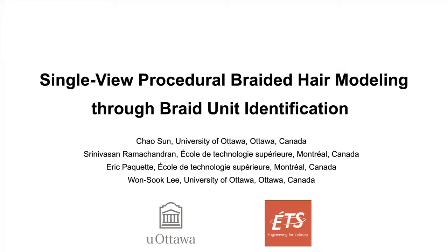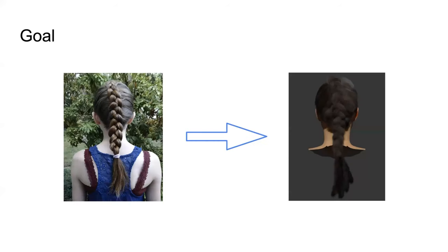Single-wheel procedure braided hair modeling through re-unit identification. Digitalization to create human avatars plays an important role in the fields of computer gaming, animated movies, and the virtual world. Both manual modeling and automatic capturing of hair styles are challenging because of the complex styling. Modeling different braid patterns with complicated occlusion among braids is a challenging task. Single-wheel methods have not yet addressed the capture of braids, so in this paper we mainly focus on generating the 3D braided hair model from a single input image.